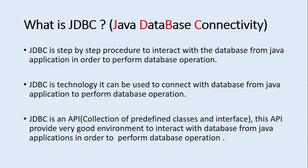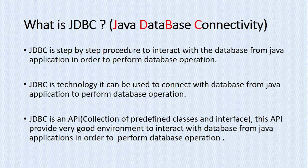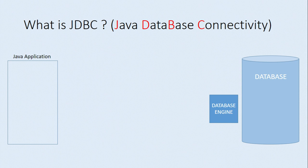The third definition, which is more technical, says JDBC is an API — Application Program Interface — which is a collection of interfaces and classes. With the help of this API we get a good environment to interact with the database from our Java application and perform database operations. This third definition clearly says it is an API providing a good environment with which we can communicate with the database and perform required operations.